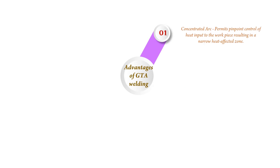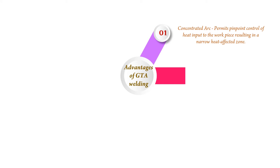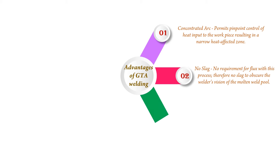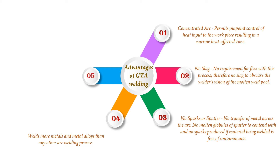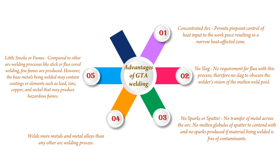Advantages of Gas Tungsten Arc Welding: 1. Concentrated arc permits pinpoint control of heat input to the workpiece, resulting in a narrow heat affected zone. 2. No slag — no requirement for flux with this process, therefore no slag to obscure the welder's vision of the molten weld pool.